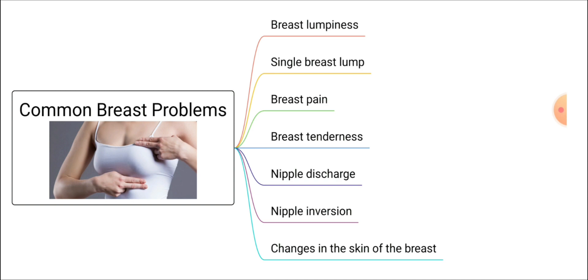Starting from this video, we can go through the salient points which will be asked in your theory papers regarding breast disorders. First of all, we should know what the common breast problems are. The breast problems are lumpiness of the breast, there can be a single lump, the patient may feel breast pain, there can be breast tenderness, and sometimes nipple discharges.